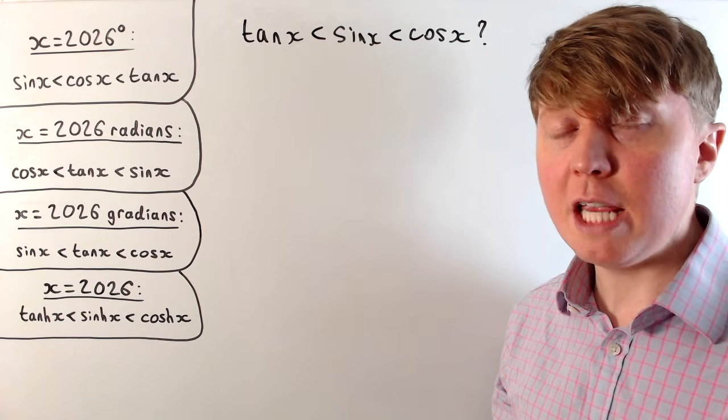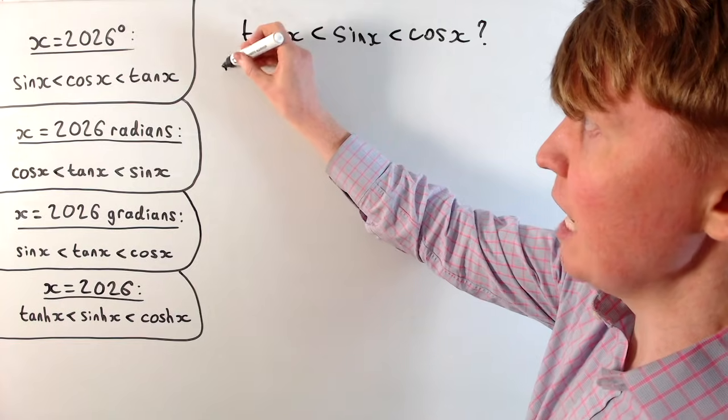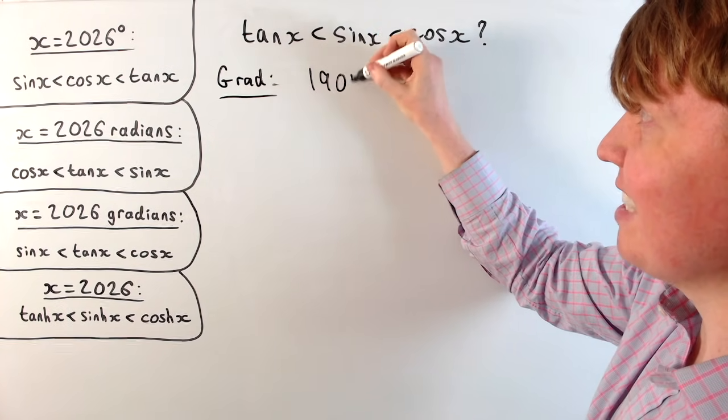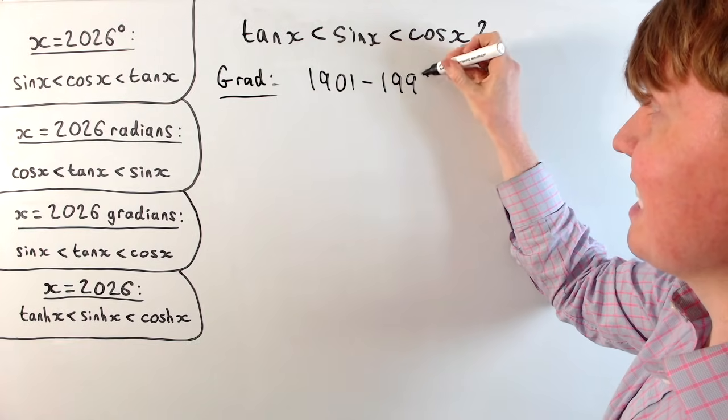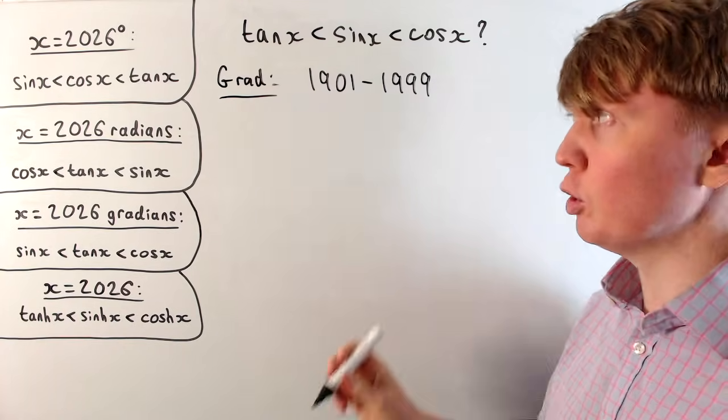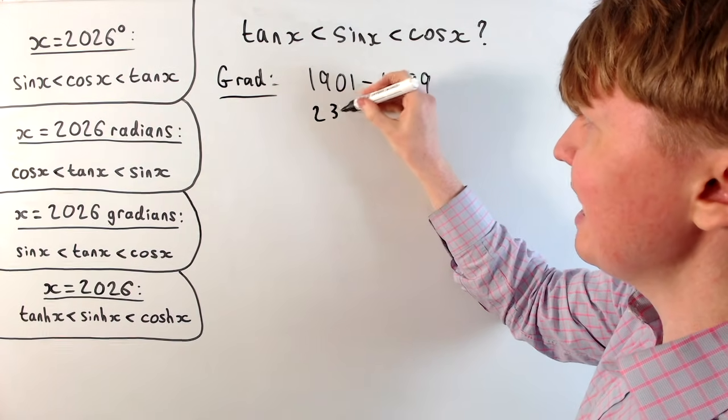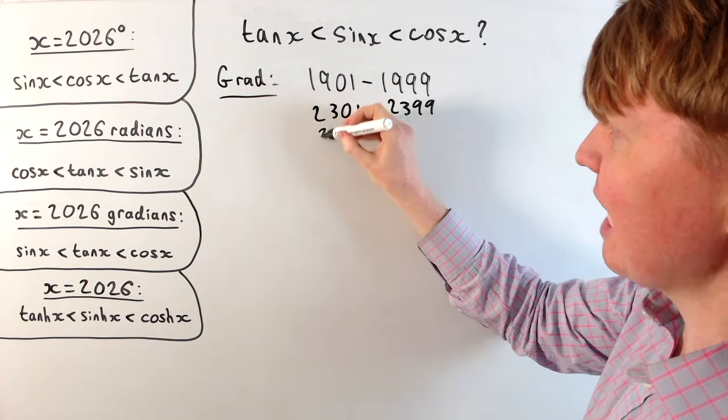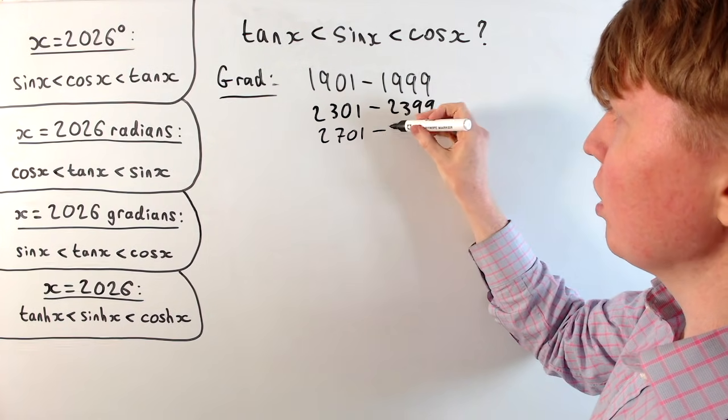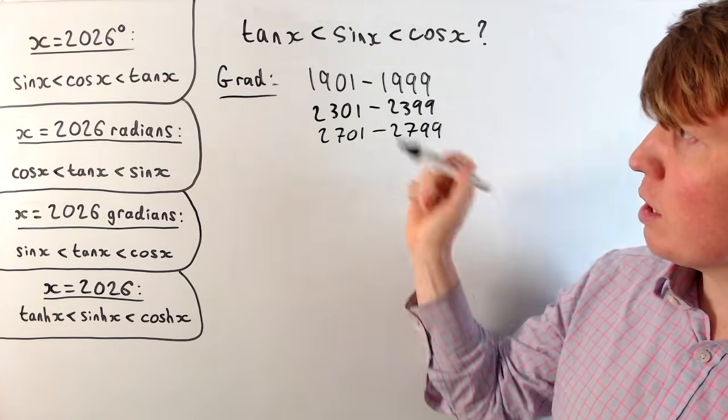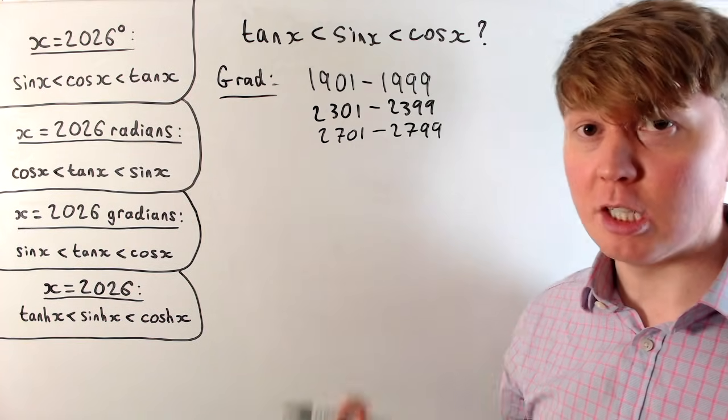So if we look first of all at gradians, the ones that change the most slowly. In gradians, we actually just had this from 1901 to 1999, including each of these. And then this happens basically for a century every 400 years. We get this next in 2301 to 2399, and again in 2701 to 2799.